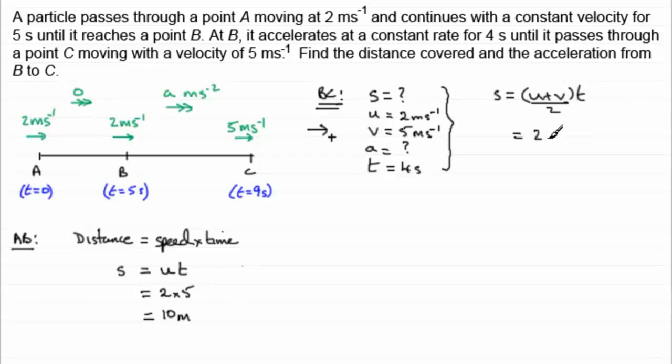And if we fill in the values, U is 2, V is 5. Multiply that by the time T of 4 seconds and divide the answer by 2. And what you get is 14. So 14 metres then from B to C. So when it comes to finding the distance covered, we can summarise and say therefore the total distance.